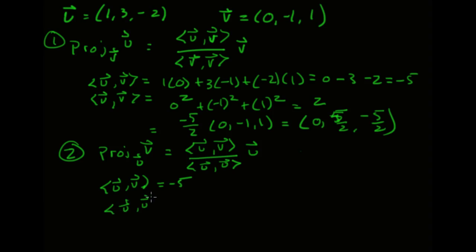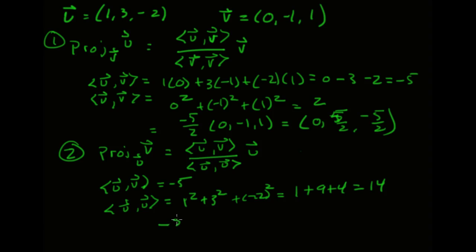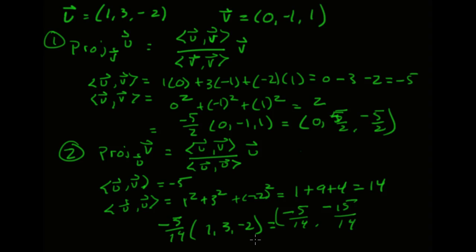The inner product u·u is the magnitude of u squared: 1 squared plus 3 squared plus (-2) squared, which is 1 plus 9 plus 4, giving 14. So the coefficient is -5/14 times the vector (1, 3, -2), which gives (-5/14, -15/14, 10/14). The last component simplifies: 2 and 14 cancel to give positive 5/7.